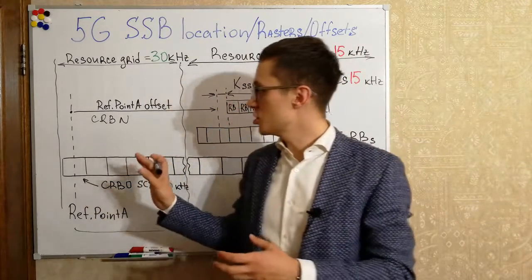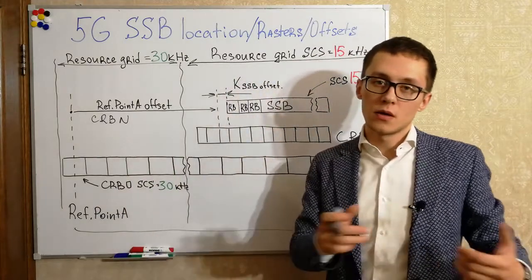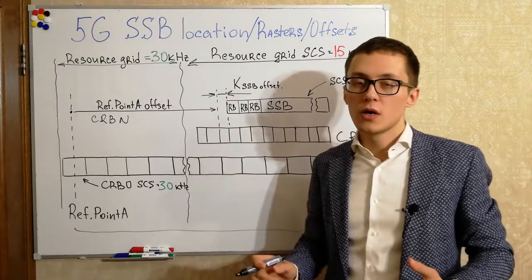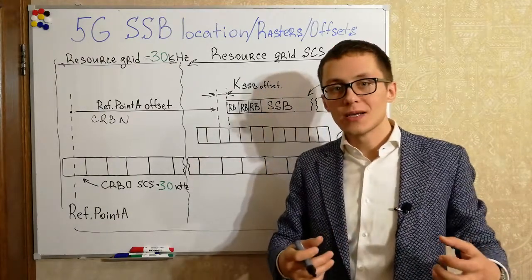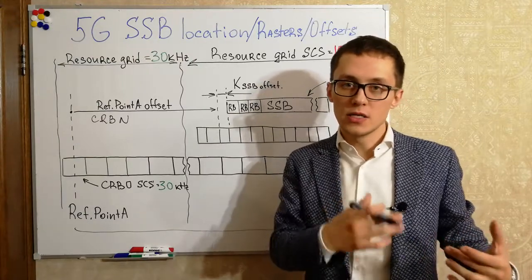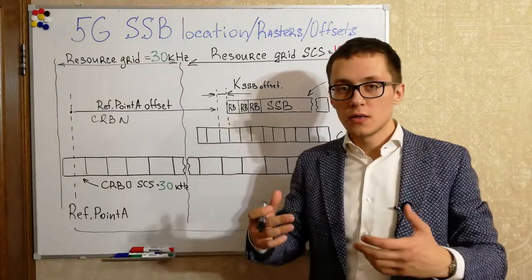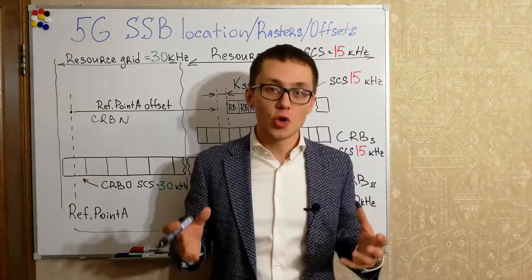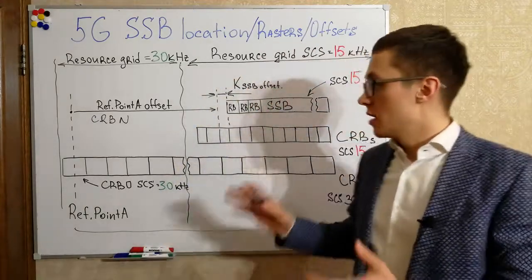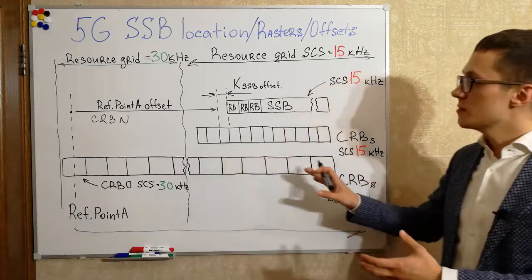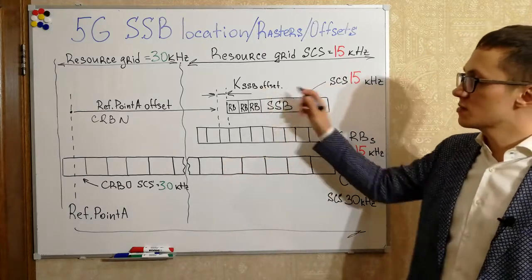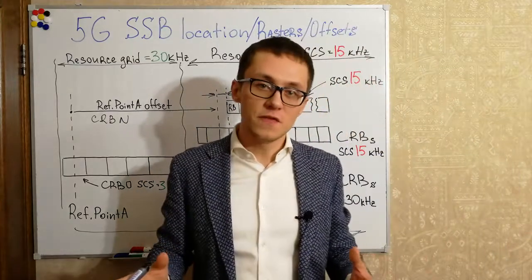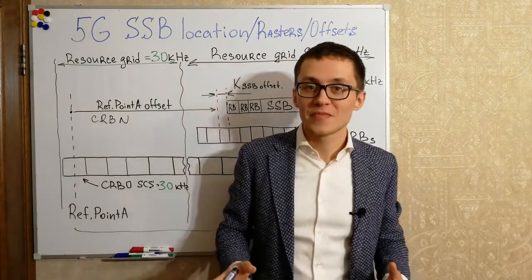Basically, such reference points can be calculated directly, or they can be obtained from signaling provided by the LTE network in RRC messages. So this was a short overview of reference point A offset, KSSB offset, different rasters, and SSB location. If you liked this video, please like and subscribe to my channel. Goodbye!